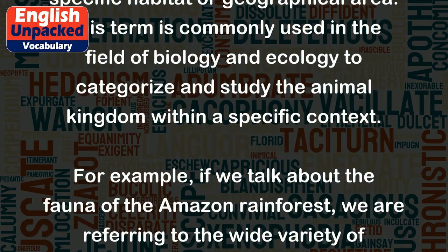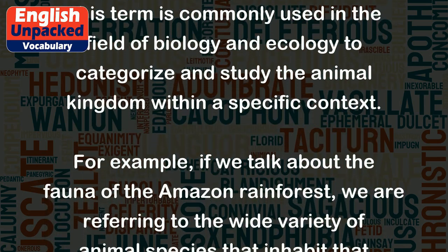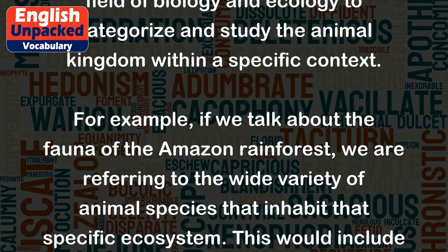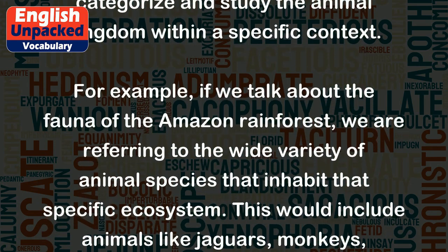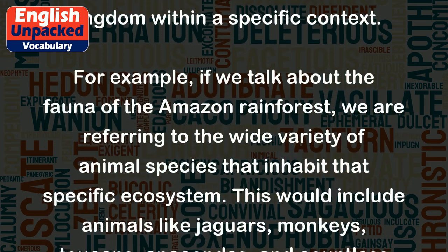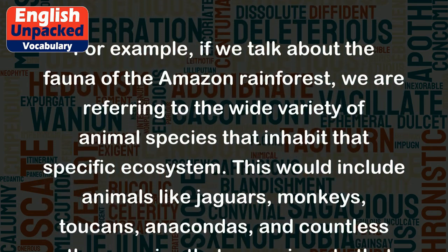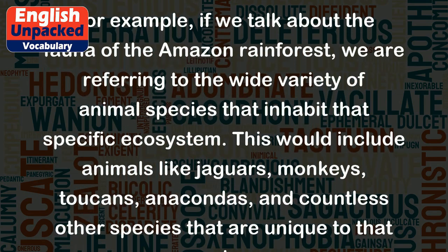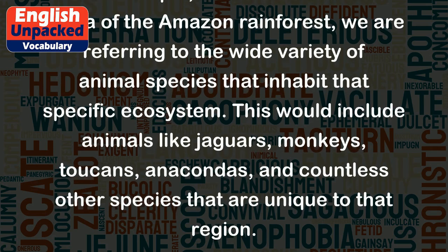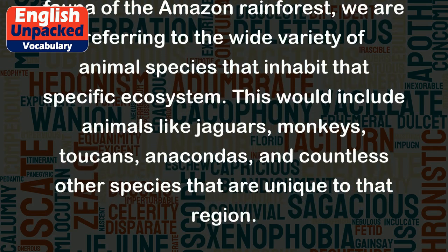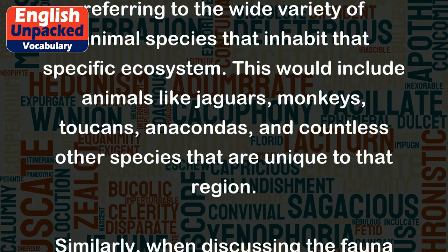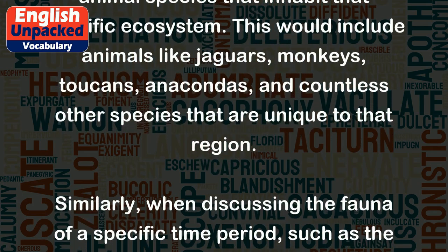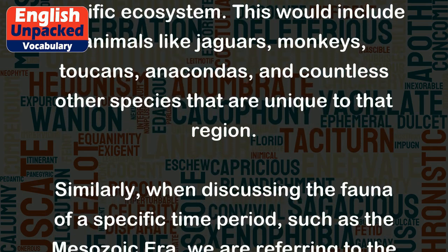For example, if we talk about the fauna of the Amazon rainforest, we are referring to the wide variety of animal species that inhabit that specific ecosystem. This would include animals like jaguars, monkeys, toucans, anacondas, and countless other species that are unique to that region.